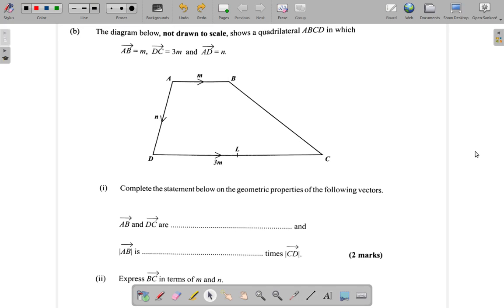Okay, part B of question 10. The diagram below, not drawn to scale, shows a quadrilateral ABCD. That's A, B, C, D.